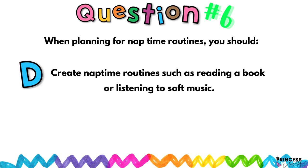Option D says create a nap time routine such as reading a book and playing soft music. In my classroom, before nap they'll have lunch. Before lunch, students play outside, then come in, wash hands, and my assistant teacher or I read a book to keep them entertained. After lunch, we prepare food, students wash hands again, and we play soft music while seated at the table.